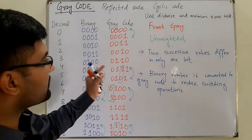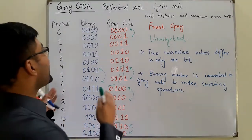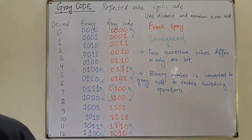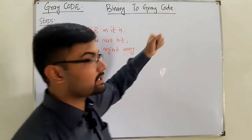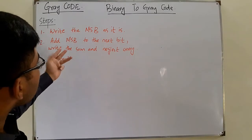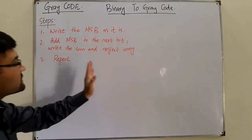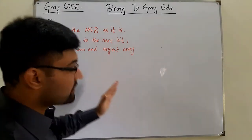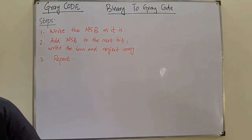Now we see the inter-conversions: from binary to gray code and from gray code to binary. The steps for binary to gray code are: write the MSB as it is, then add the MSB to the next bit, write the sum, and neglect the carry.